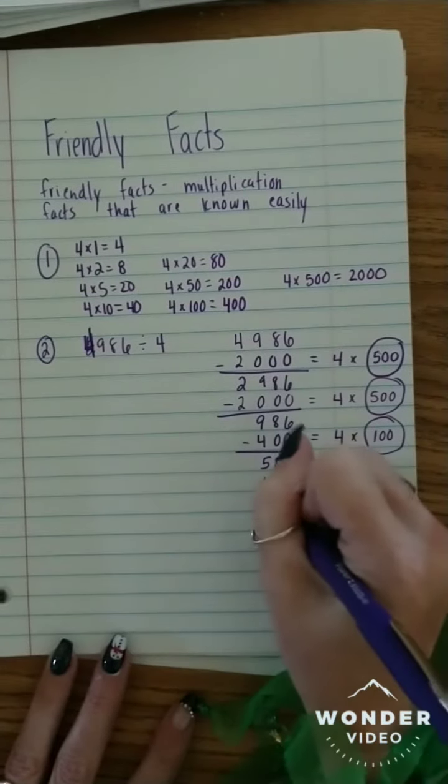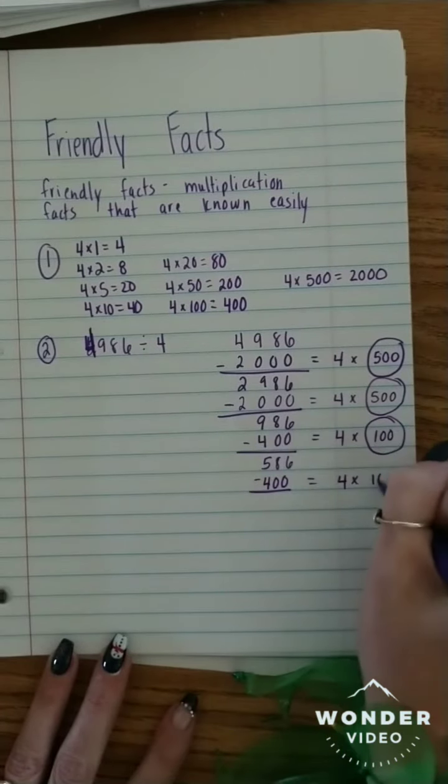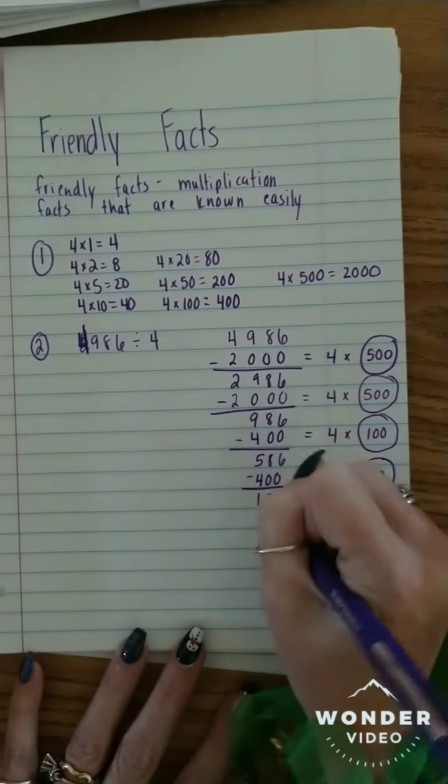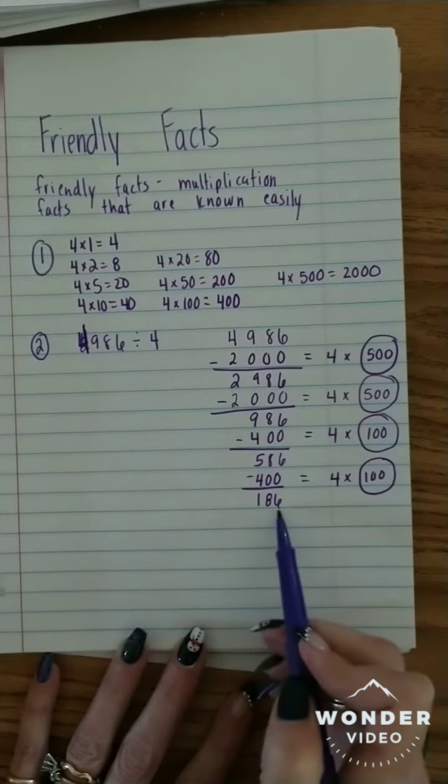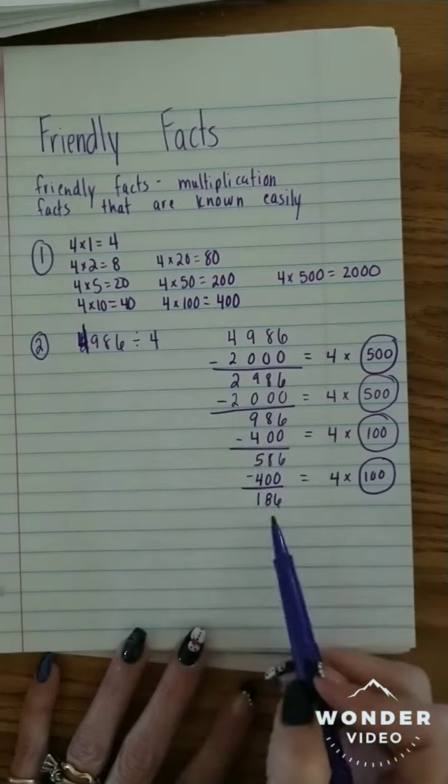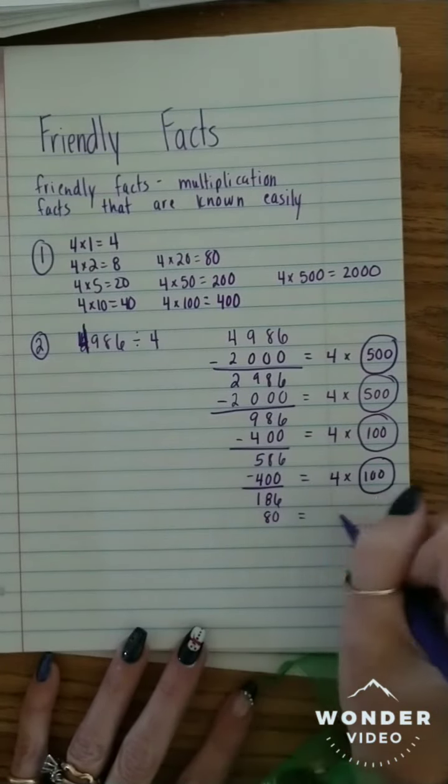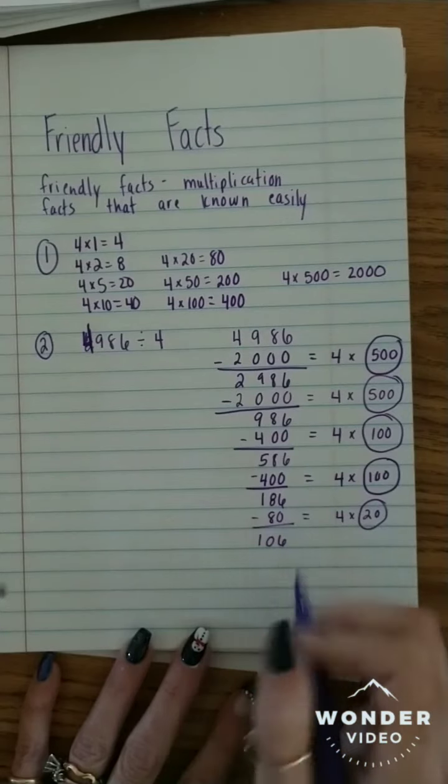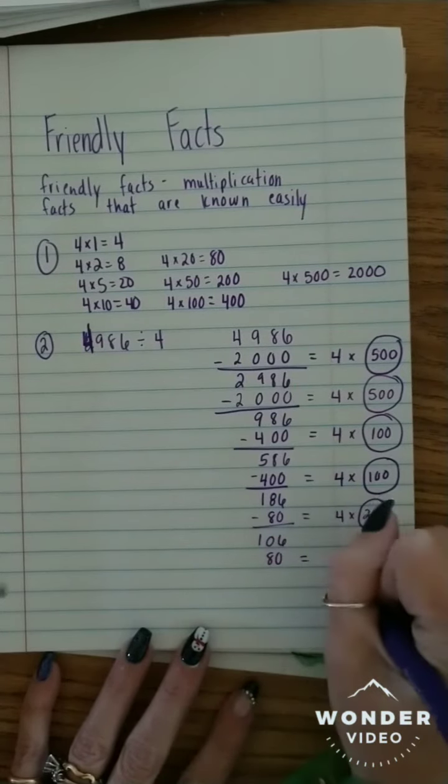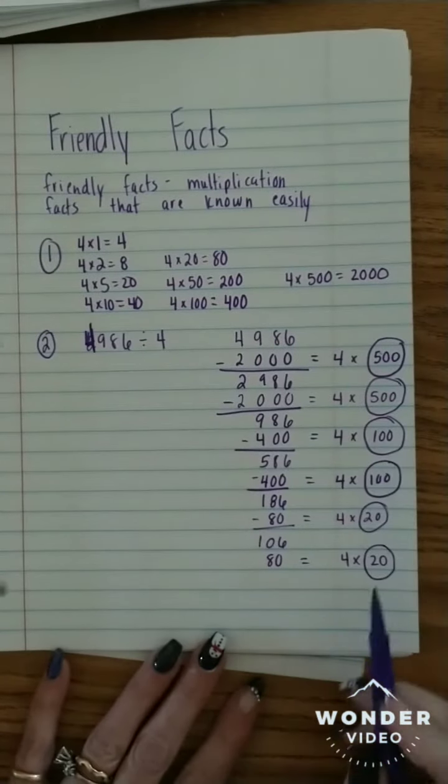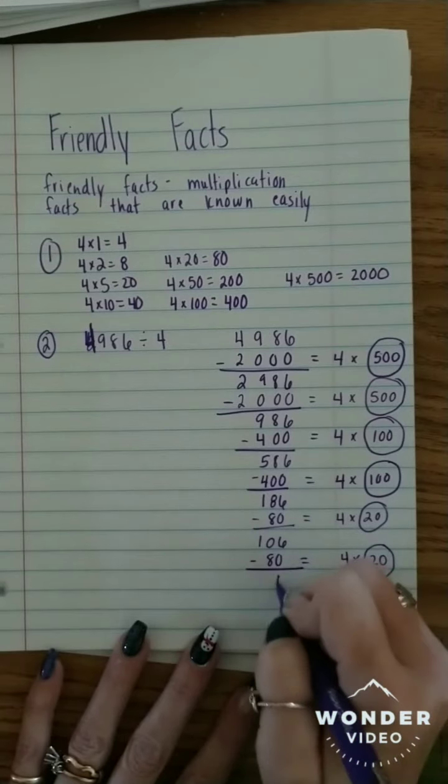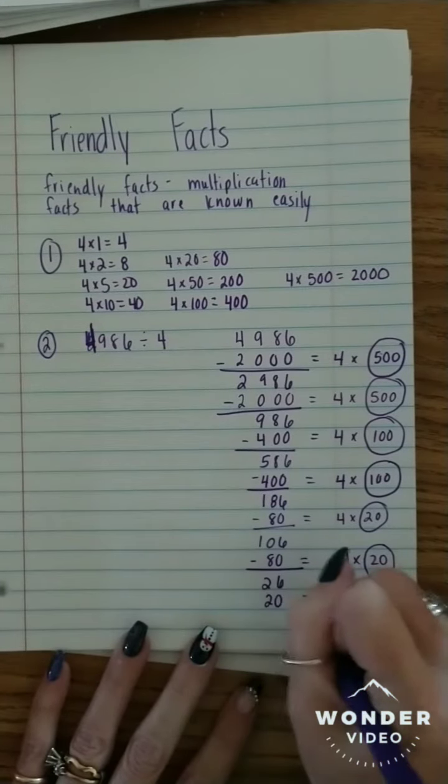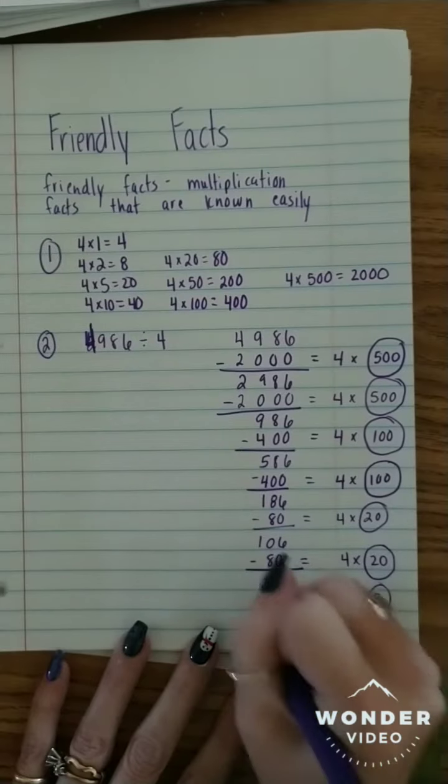That is 586. And so I'm going to subtract out another 400. And that's 4 times 100, and I circle that 100 again because that tells me how many times I use that 4. And that's 186. And so now obviously I can't take out another 400 because I only have 186. I can't do 200, but I can do that 80. Let me do 80. And that's 4 times 20, so I'm going to circle the 20. Subtract that, that gives me 106. And I could do another 80. That's 4 times 20.